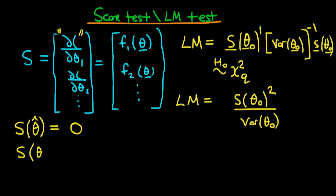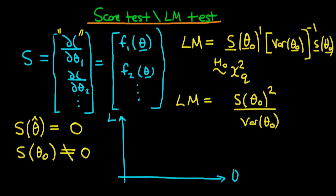However, we're not evaluating the score at the maximum likelihood estimates — we're evaluating it at θ₀. In general, this isn't going to be zero, because we haven't maximized likelihood with respect to that particular parameter. We can draw a likelihood function: the y-axis represents likelihood, and the x-axis represents the particular value of that parameter. The null hypothesis value θ₀ is marked, and the score at that point is given by the gradient of our likelihood function.